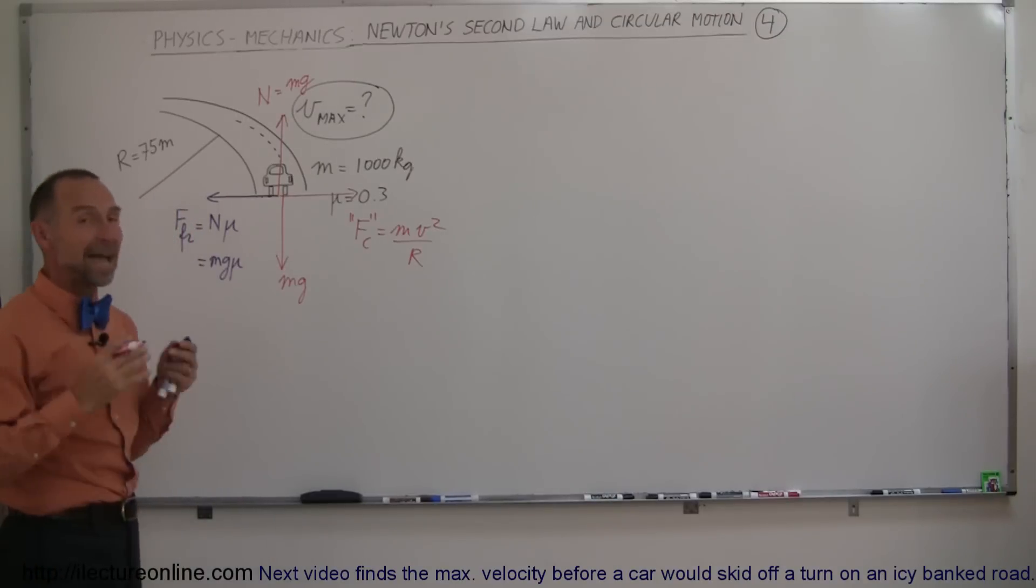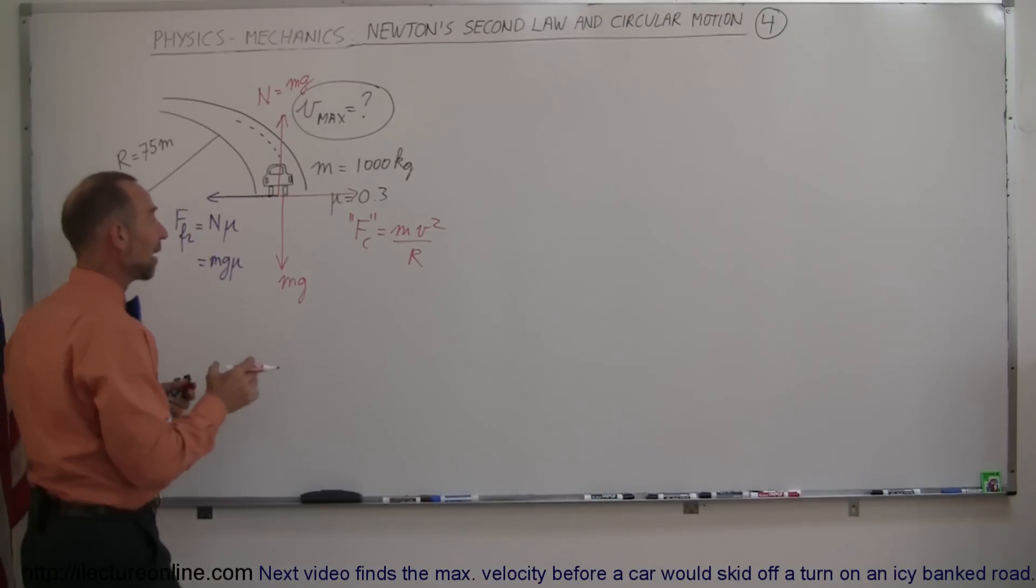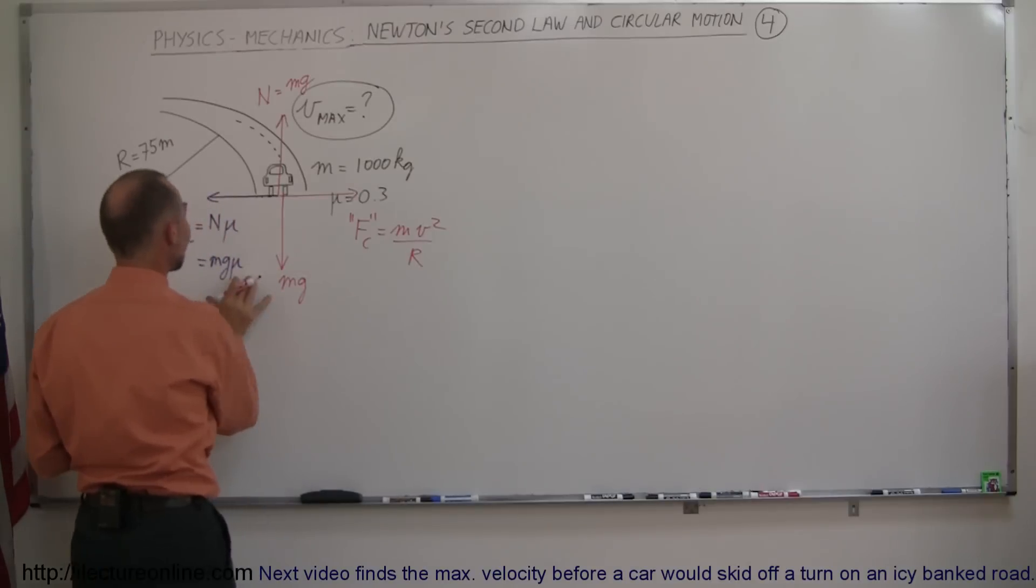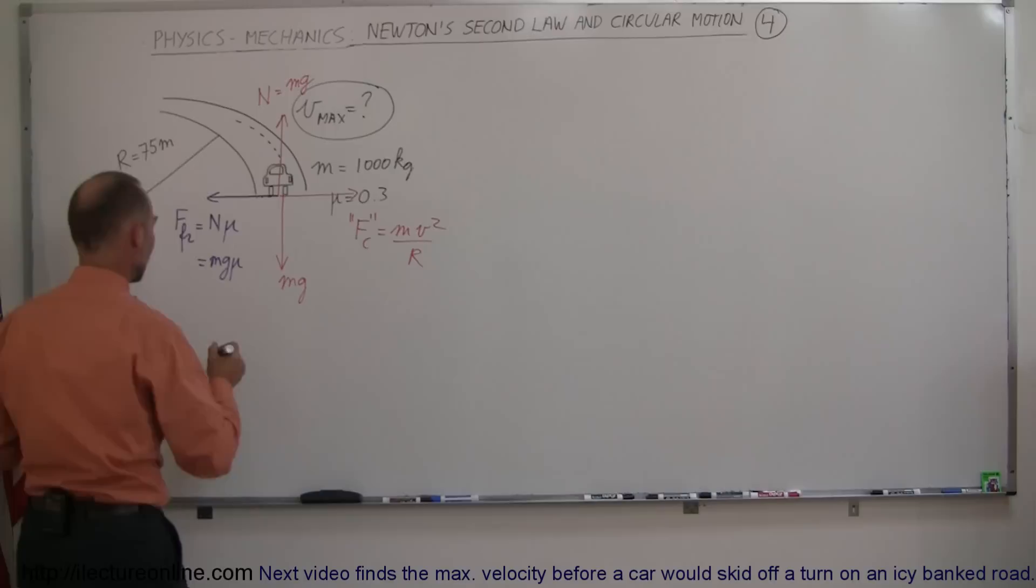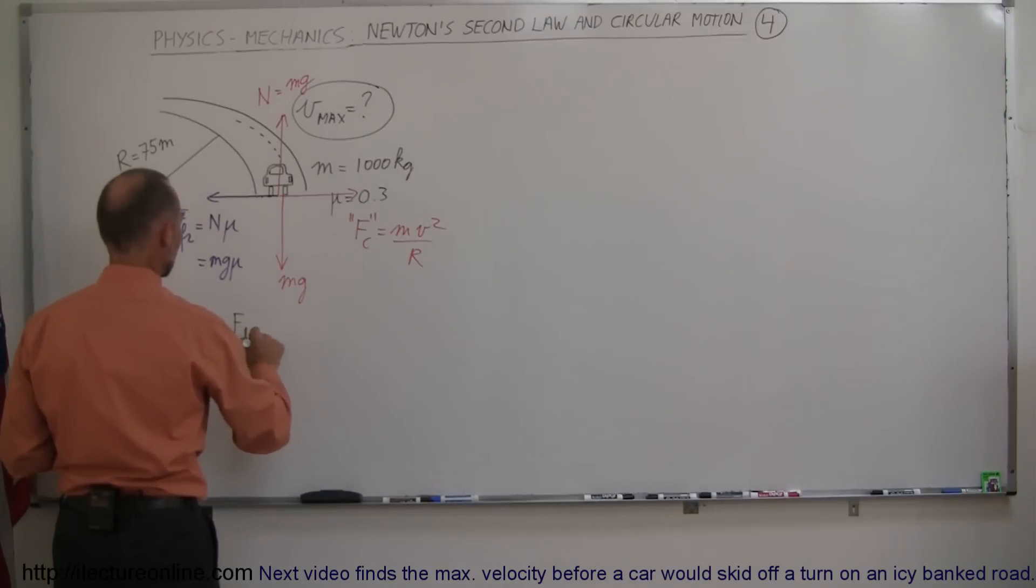So what is the maximum velocity that you can have? The maximum velocity can be determined by setting this equal to this and solving for v, because this is the maximum friction force that can exist between the tires and the road. So let's set those two equal to each other. Force friction is equal to the centrifugal force. We have mg mu is equal to mv squared over r.